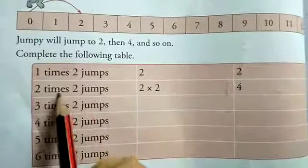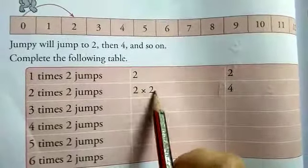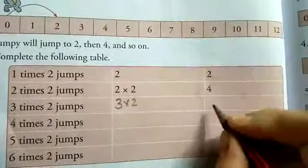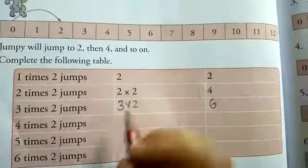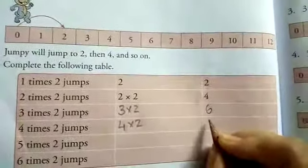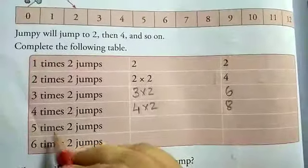2 times 2 jumps: 2 into 2, 2 times 2 is 4. 3 times 2 jumps: 3 into 2, 3 times 2 is 6. 4 times 2 jumps: 4 into 2, 4 times 2 is 8. 5 times 2.